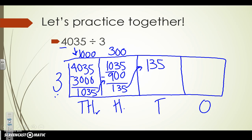We bring it over — 135. Can three go into one? No, but that's okay because that's in the hundreds place. We're going to think about this one as being 13 groups of 10. How many times can three go into 13 without going over? Three times four gives us 12, so that's as close as we can get. Because it's in the tens place, we need to add on that one zero. We multiply three times 40 — three times four is 12, don't forget the zero. Subtracting: five minus zero is five, three minus two is one, and one minus one is zero.